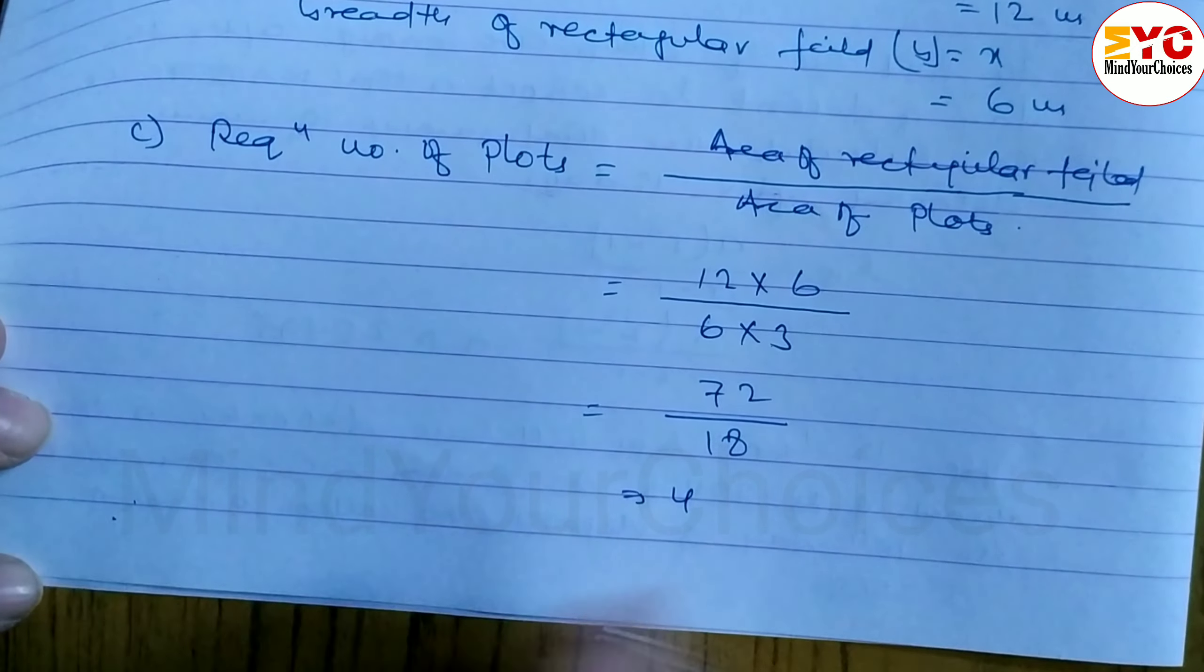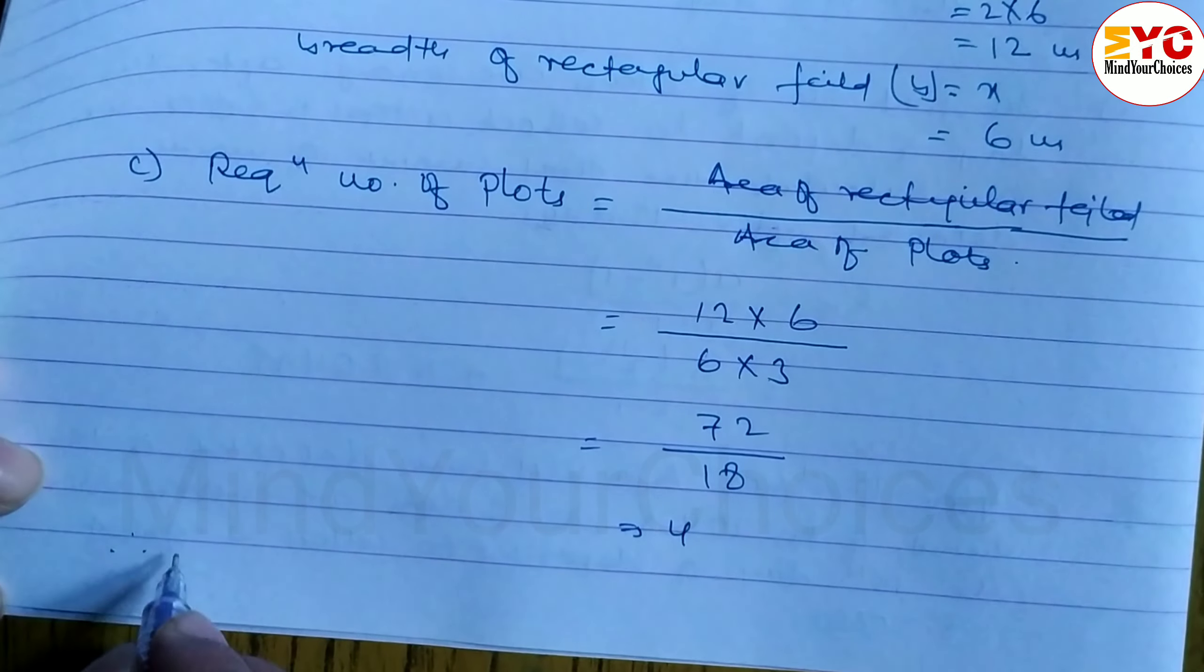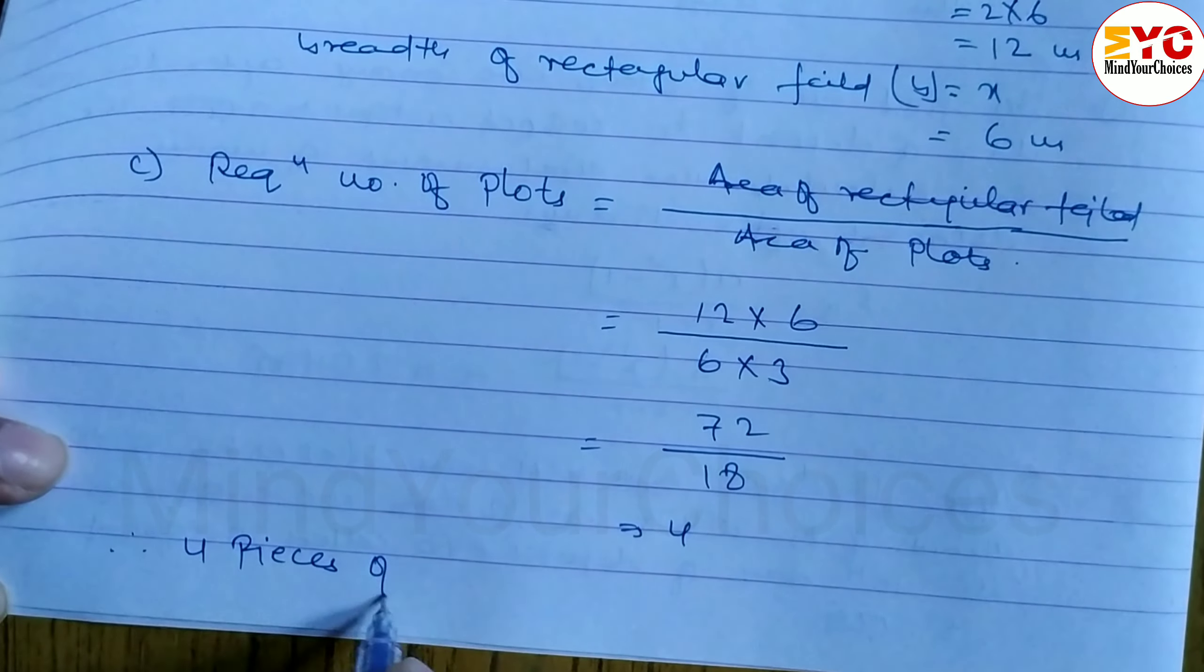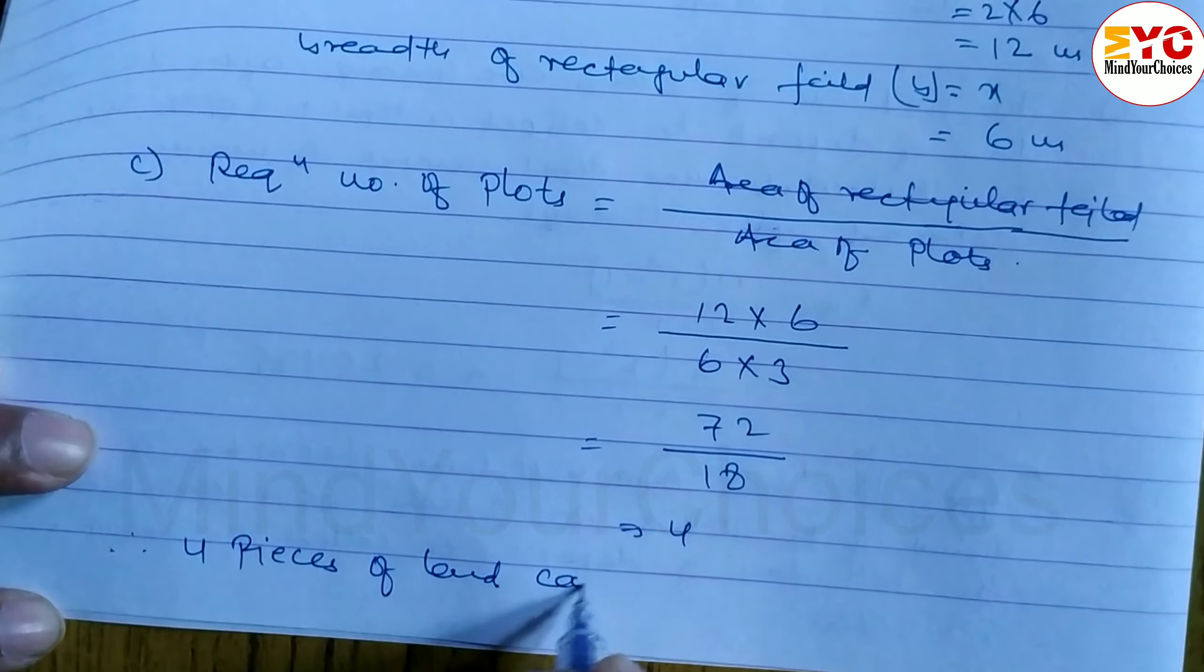We can write here: therefore, conclusion is 4 pieces of land or plots can be made with dimension 6 into 3.